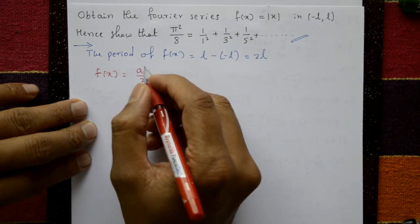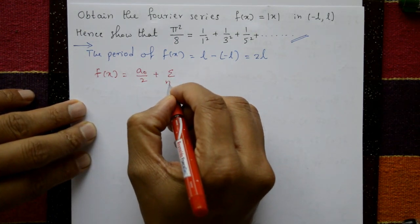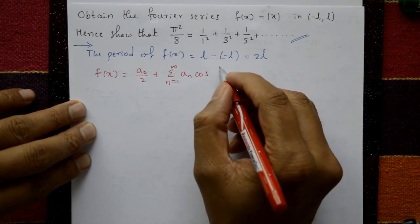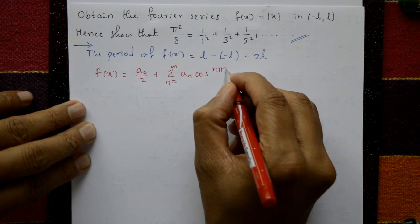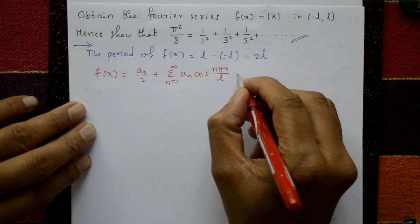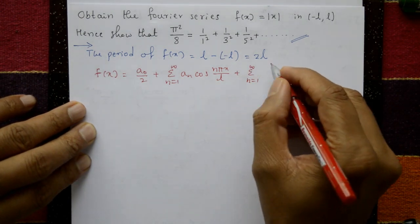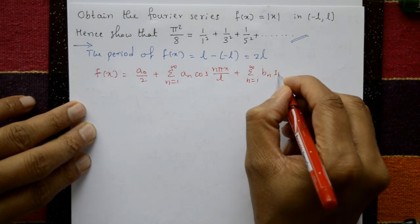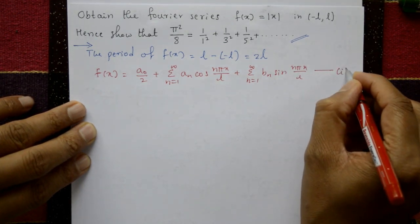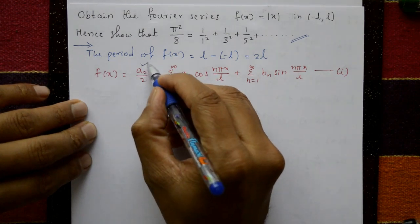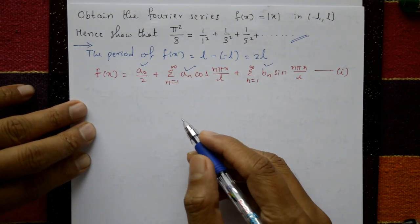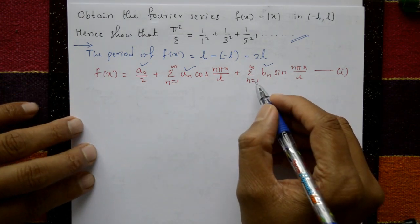f(x) = a₀/2 + summation n=1 to infinity of aₙ cos(nπx/l) plus summation n=1 to infinity of bₙ sin(nπx/l). This is equation number one. Now we require a₀, aₙ, and bₙ.